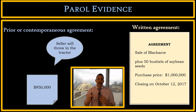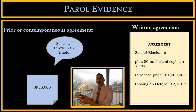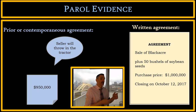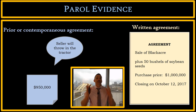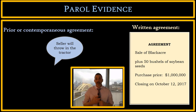Let's look at our next one: $950,000 purchase price. That is our prior agreement. What does it do? It contradicts our written agreement. Our written agreement expressly says a million dollars. So we apply the Parole Evidence Rule, and the Parole Evidence Rule excludes this evidence — the jury will not see this evidence.